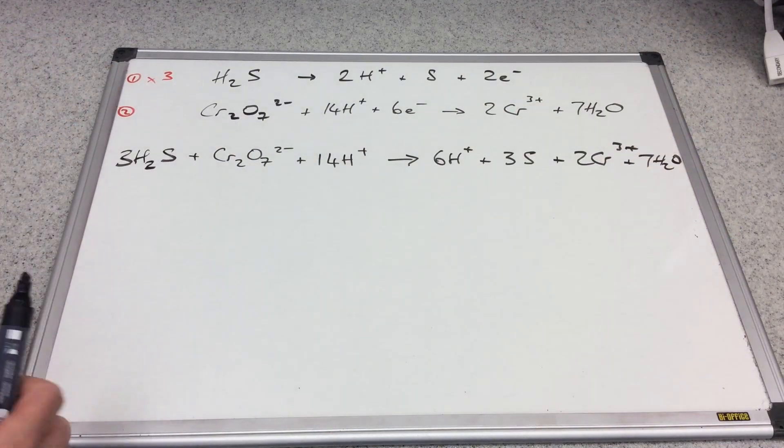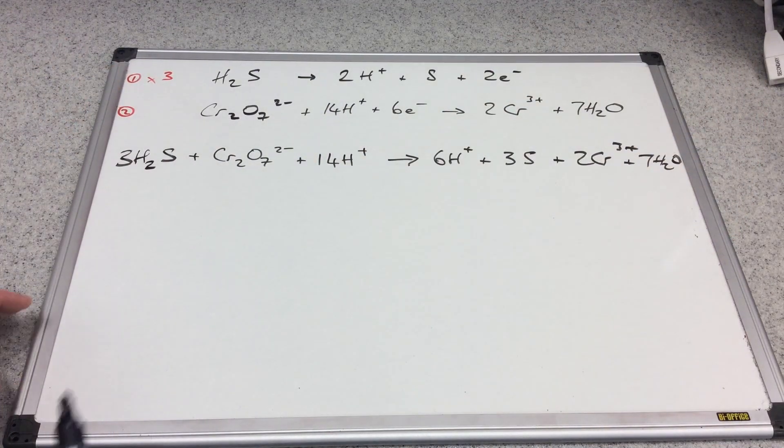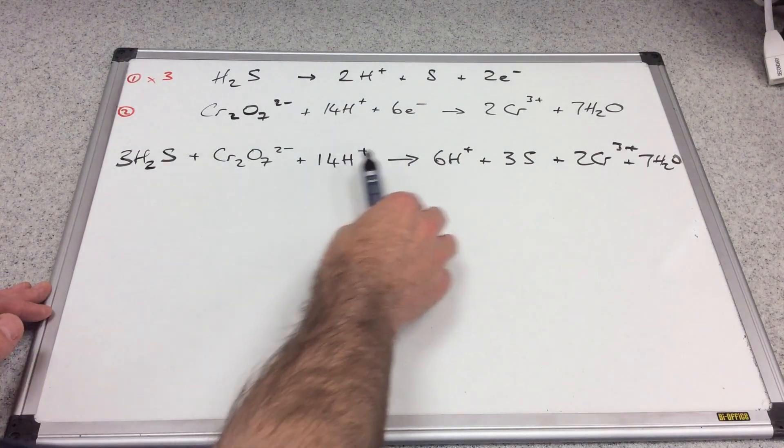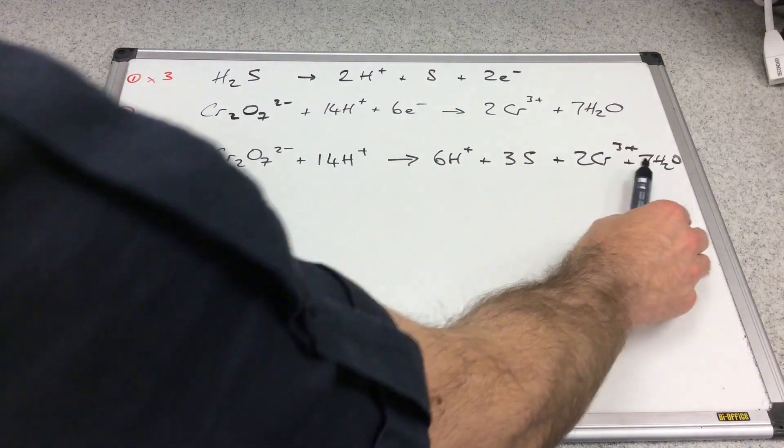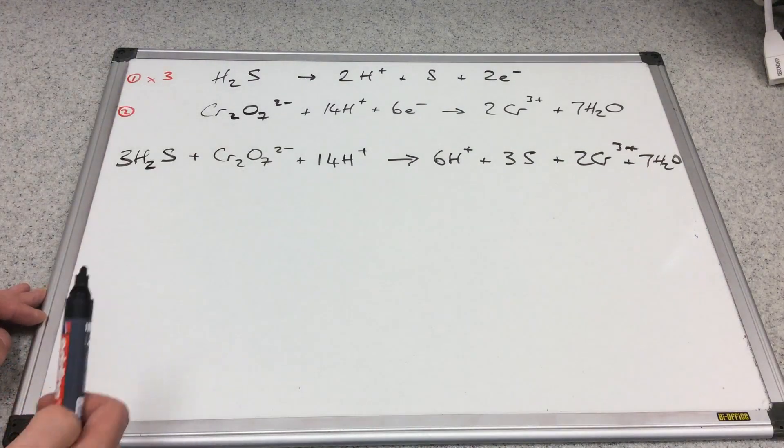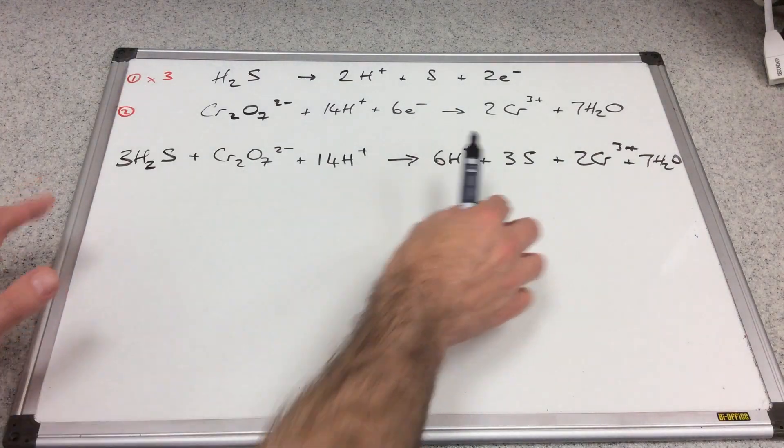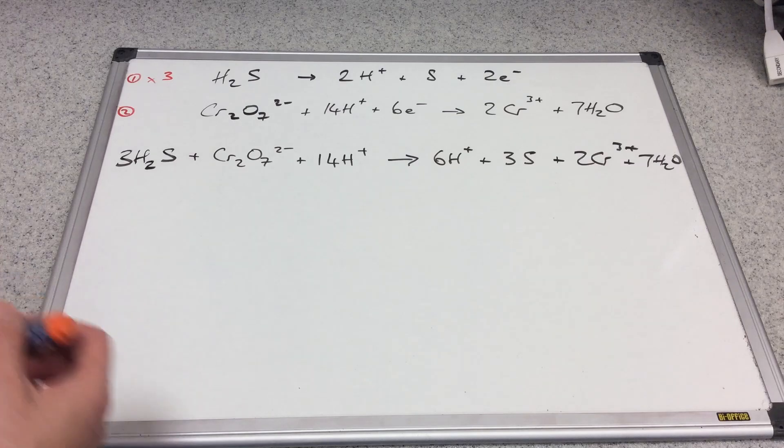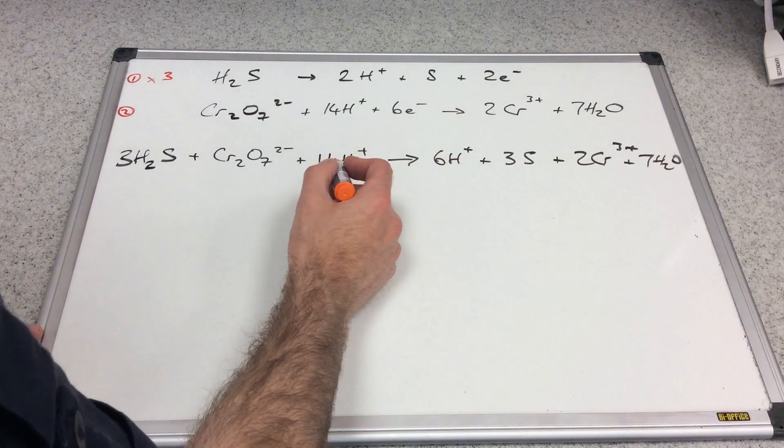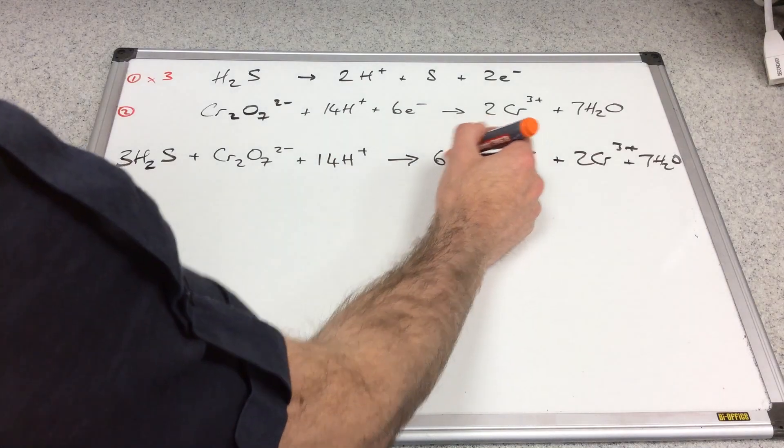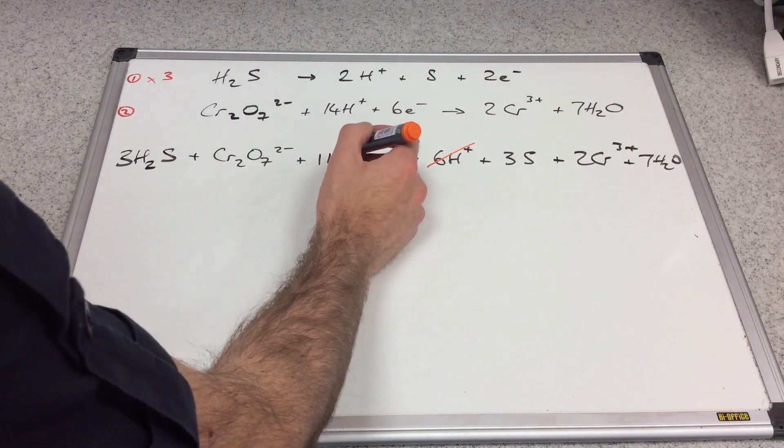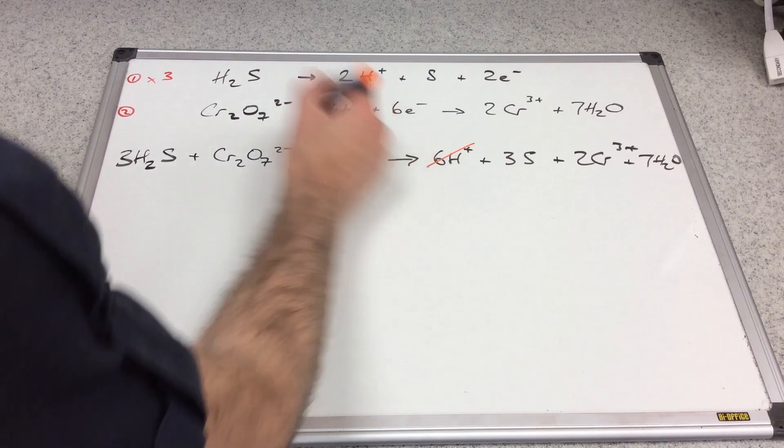The point I want to make is you can see that the H+ ion is on both sides of the arrow, and you shouldn't leave it like that. Quite often I see students leaving that as their final answer, and that wouldn't score you the marks I'm afraid. We need to simplify this. Obviously they will cancel because there's more on this side, and that will take that down to eight.